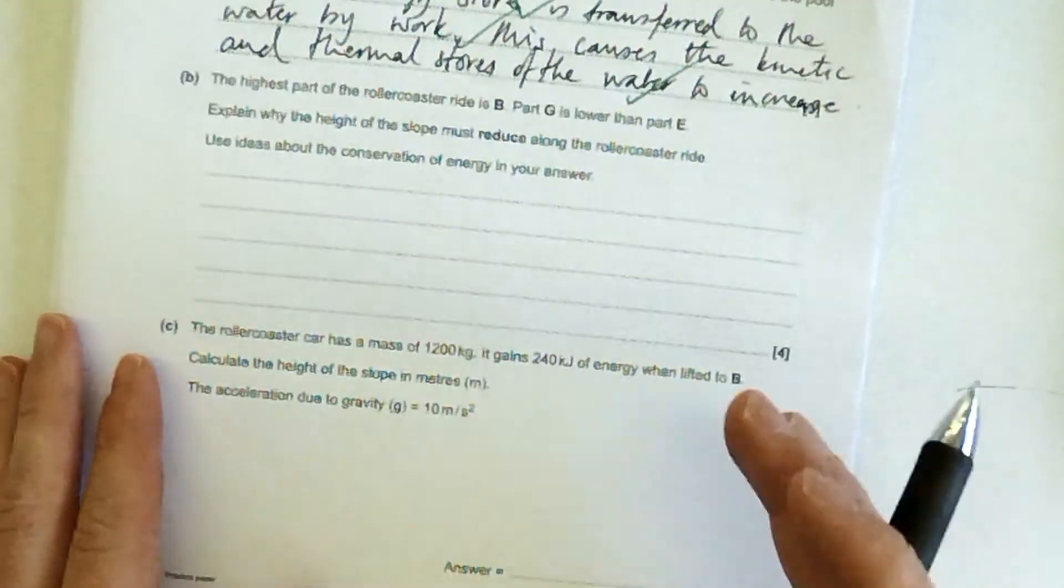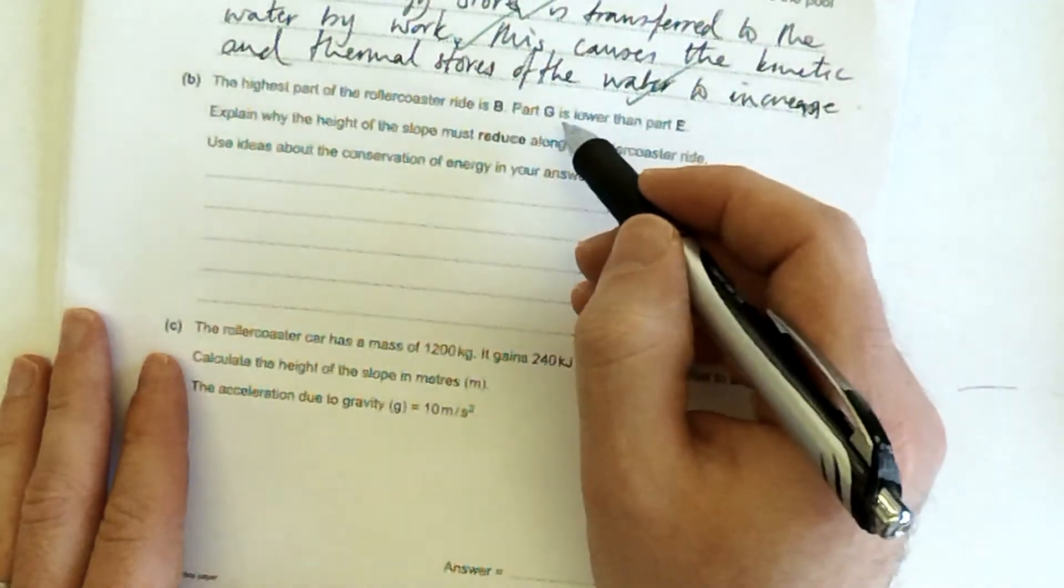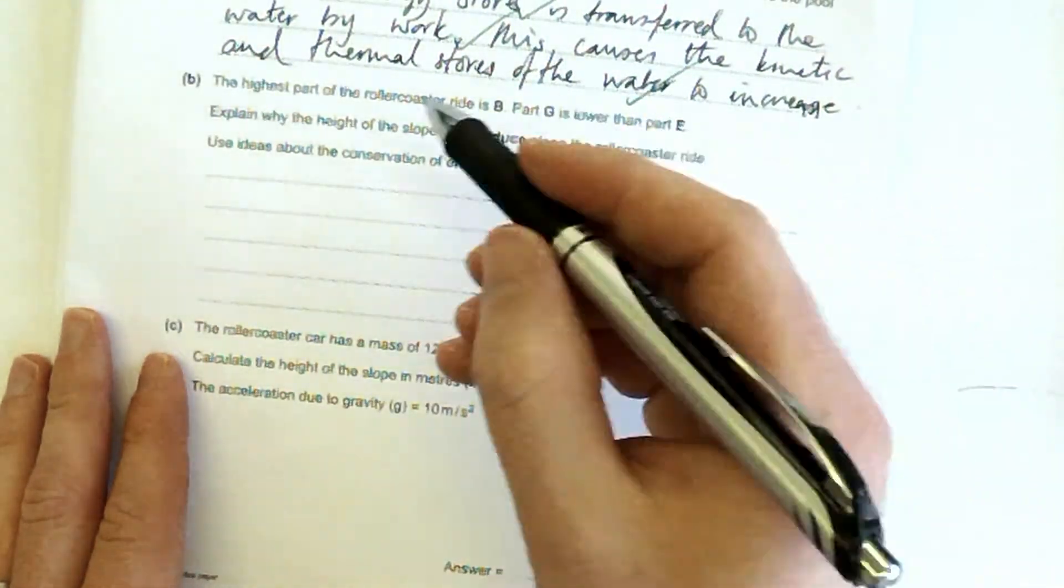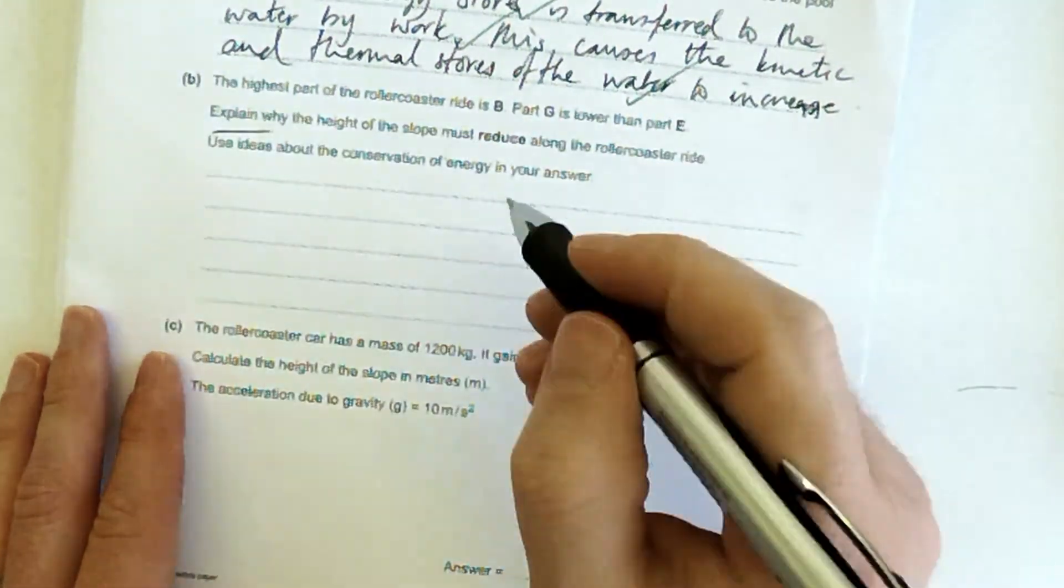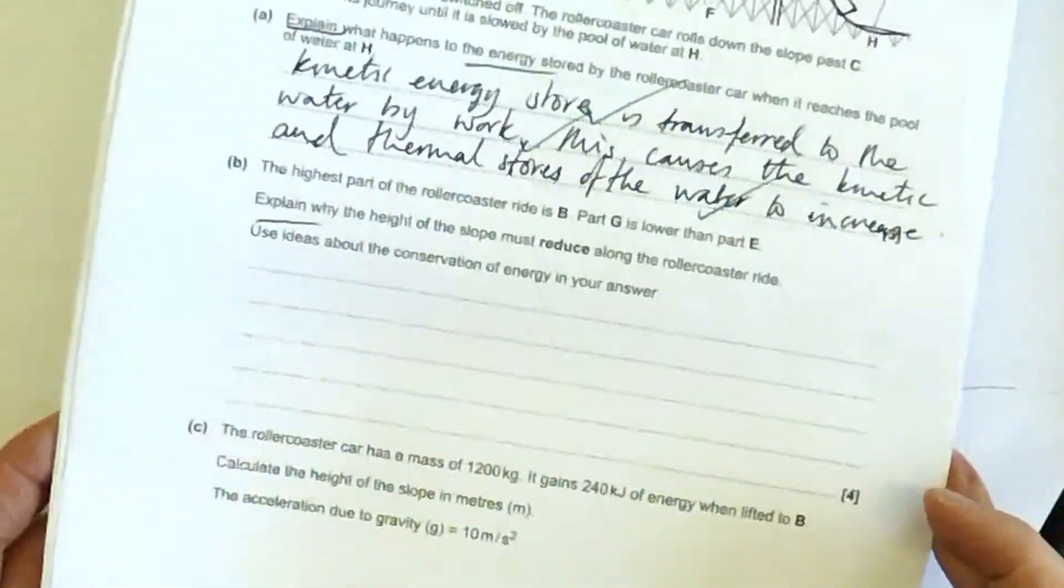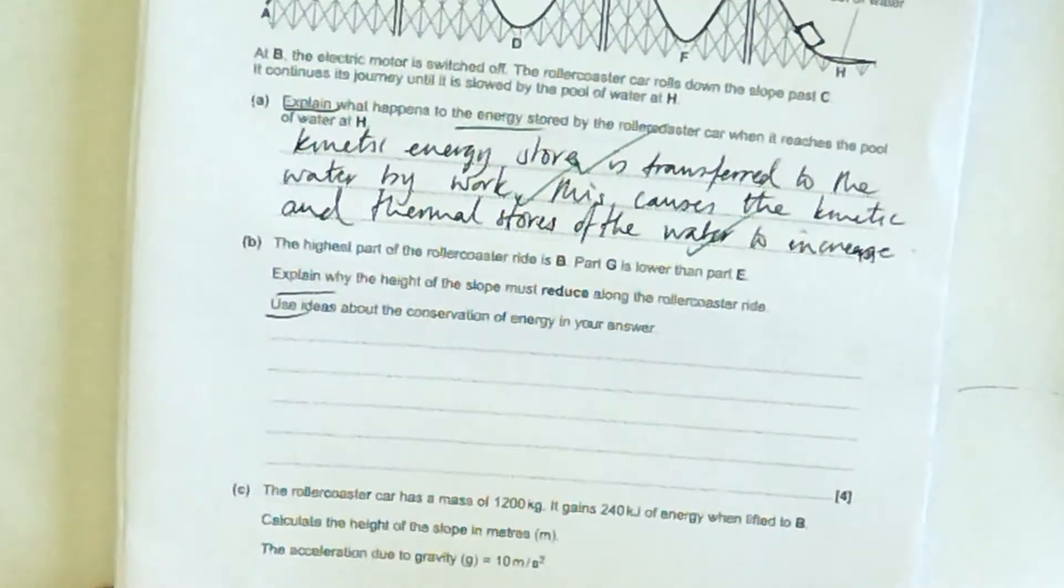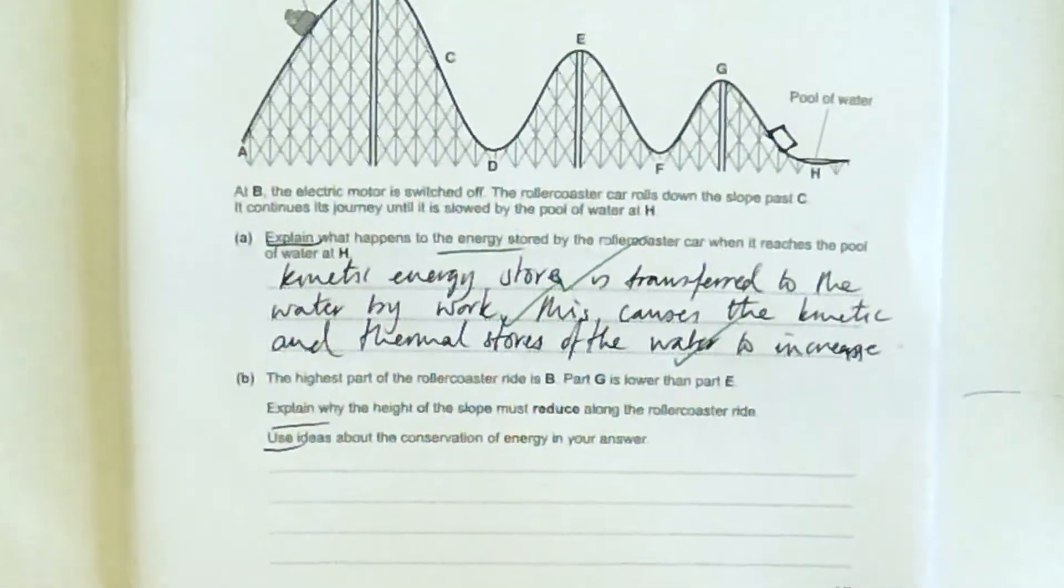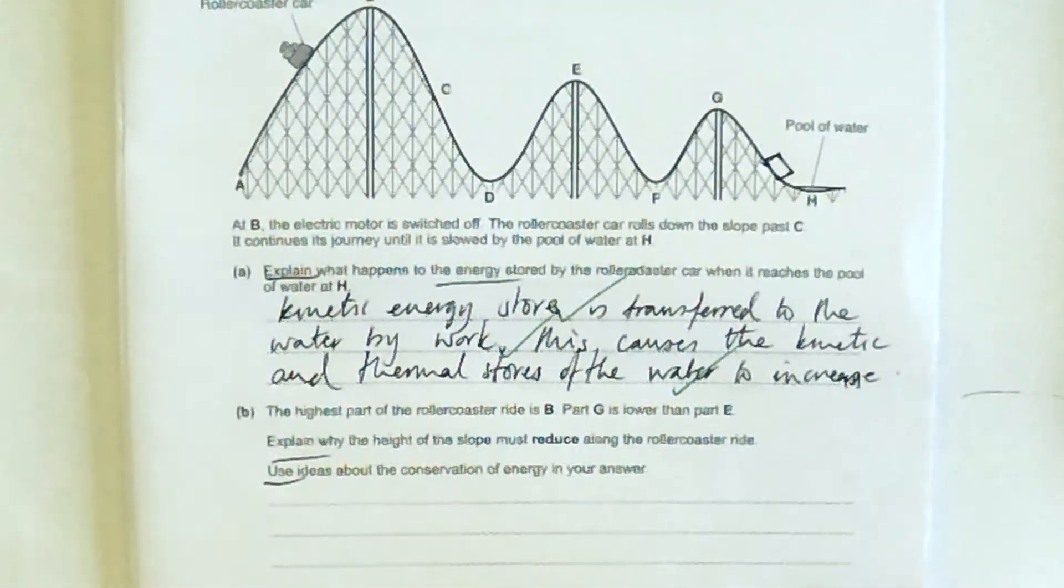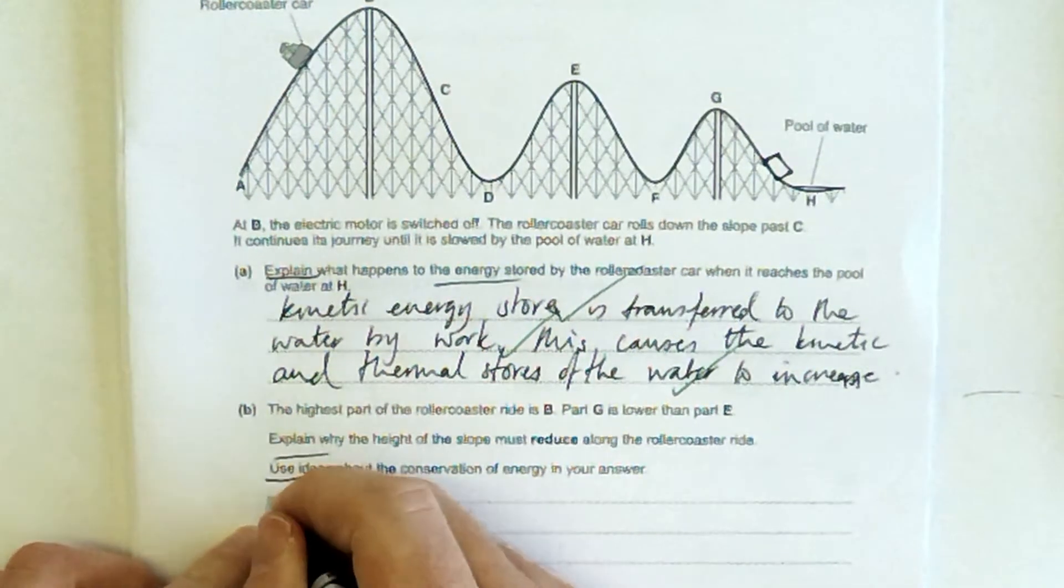The highest part of the rollercoaster is at B, part G is lower than E. Explain why the height must reduce along the rollercoaster ride. Use ideas about conservation of energy in your answer. Now, I would encourage you, if you see that, use an idea, then bang down that idea first.